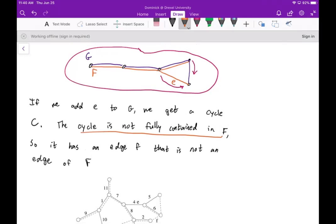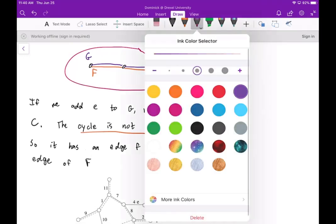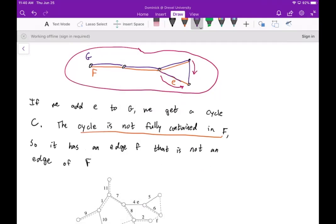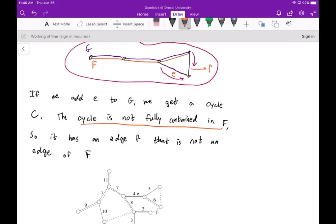So of course, why wouldn't we select e? And of course in this diagram here, what we would have, so if we add e to G, you would get this cycle because now if we were to add e to G, that would become this edge here. Now the cycle of course is not fully contained in F, because this edge right here is not in F. So I can call that f.